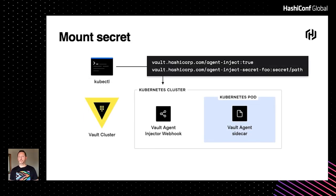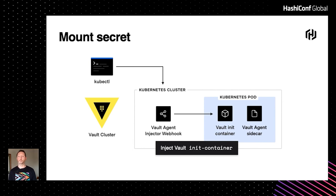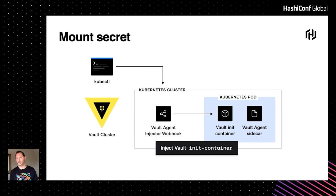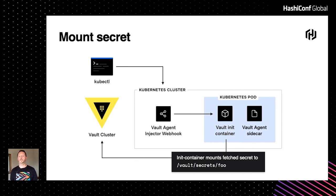Let's talk about this in two phases. First, bootstrapping: how do we mount secrets from Vault into Consul? We've accomplished this by adding annotations to the Consul components so that the Vault agent injector will catch them and mutate them to attach the secrets when they're started. The Vault webhook adds the Vault init container, which does the fetching of the secrets, and also adds the Vault agent sidecar. When the init container runs, it reaches out to the Vault cluster, fetches your secret, and attaches it to the pod in a location you define by your annotations.